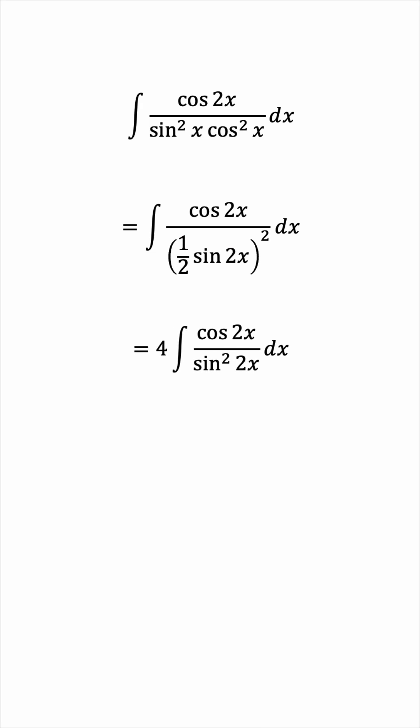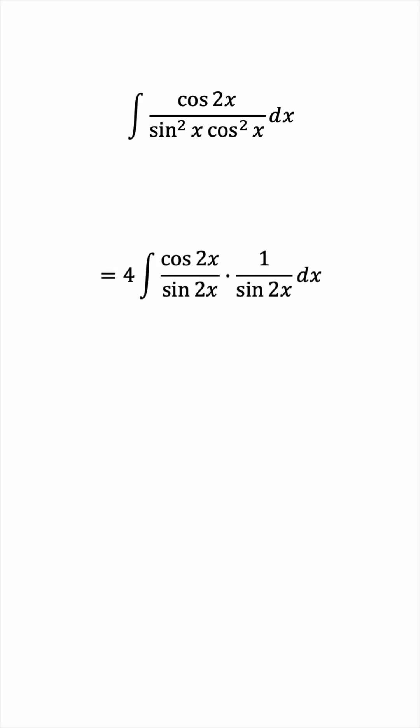And then we can rewrite this as cosine 2x over sine 2x, and leave the second sine copy in a separate fraction. This allows us to rewrite the integrand as cotan 2x times cosecant 2x.